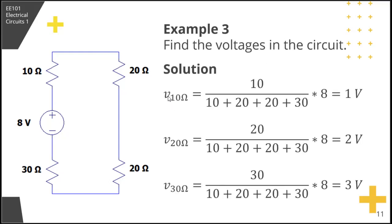For the voltage drop across the 10 ohm resistor, that's equal to 10 over the sum of all four times the voltage across the series resistors, so that is 8. So 10 plus 20 plus 20 plus 30 is 80. Then 10 times 8 is 80 also, so that's 1 volt. The voltage drop across the 10 ohm resistor is 1 volt.